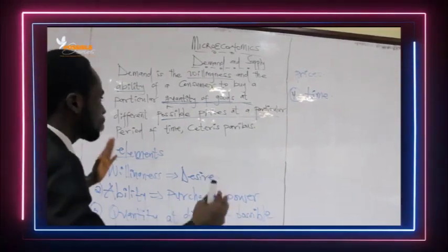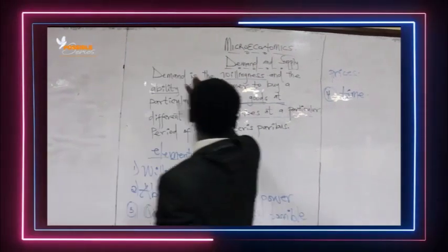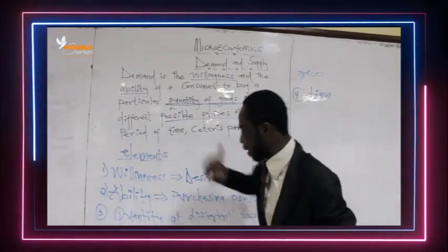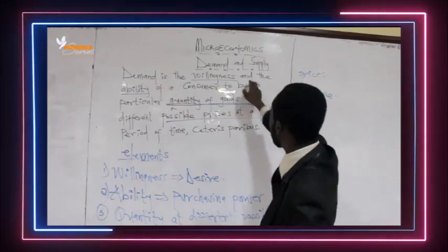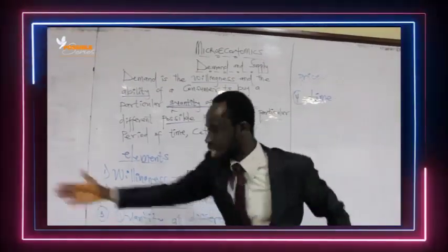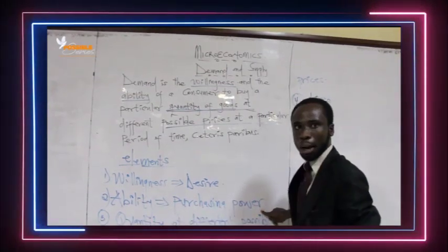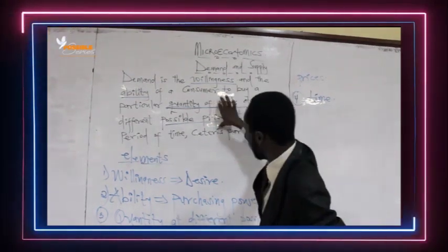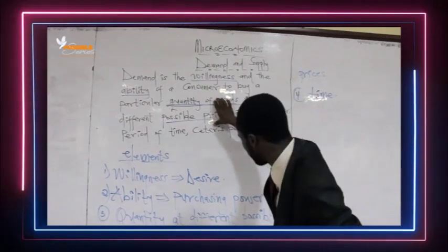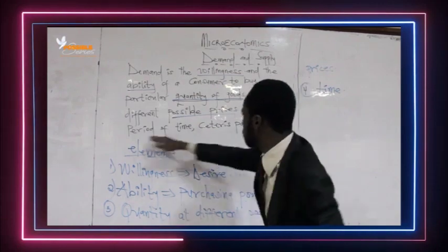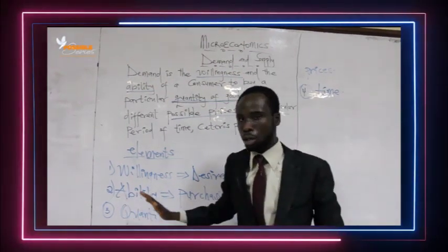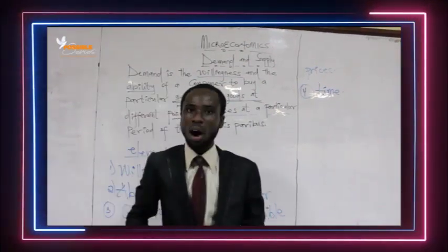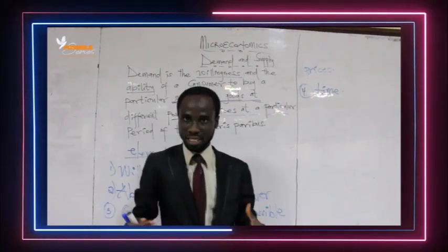These are the four key components that must be present in the definition of demand. Demand is the willingness — which means desire — and the ability — which means purchasing power. So demand is the willingness backed by purchasing power to buy a particular quantity of goods at different possible prices, at a particular period of time, all things being equal. It is from this that we derive the law of demand. This has been our first lecture — watch out for the next one. God bless you.